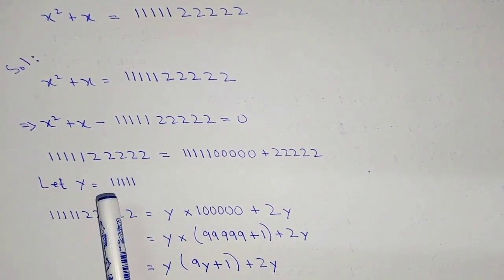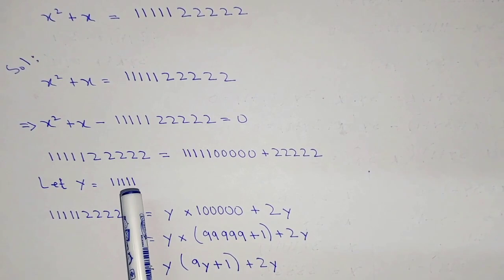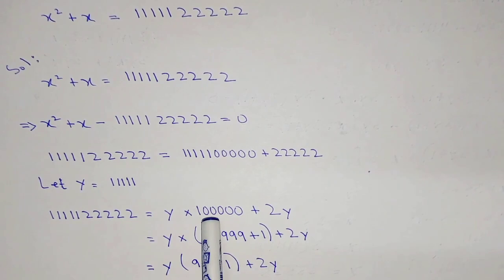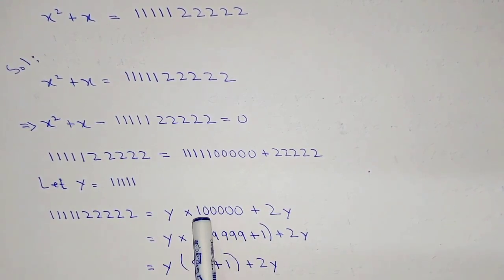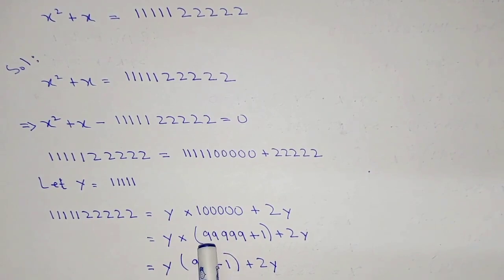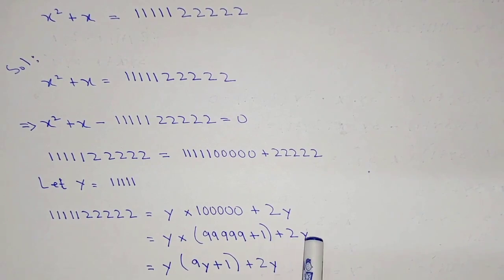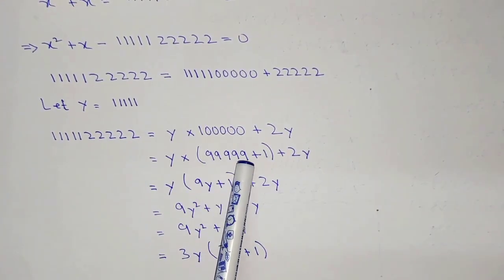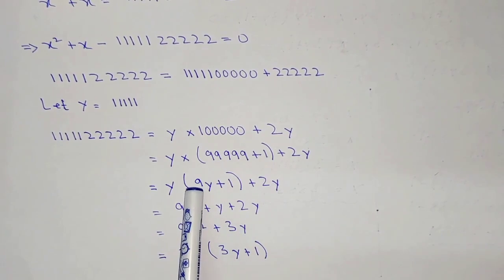Let y equal to 5 times 1. So we can write this as y into (1 leg plus 2y), and rewriting 1 leg as 99999 plus 1, plus 2y. Here we have y, so we can write this number as 9y, because y is equal to 5 times 1.